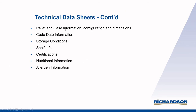You will also see pallet and case information, configuration dimensions, lot coding, how it's expressed in this product, and storage conditions. In the case of fat, you can't just put it at ambient. In some cases you have to have cold chain, and in other cases cold chain is going to be detrimental to this product and its functionality, as well as shelf life and so on.